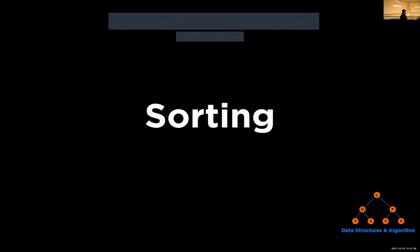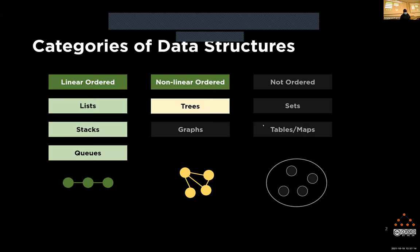Today we are going to complete sorting — I think we did not finish quicksort last time, so I'll go over the pseudo code for quicksort. Then we'll get started with sets, maps, and hash tables, which is also a crucial component of your project two. After Thursday's lecture you will have all the knowledge required for project two. We'll cover the first half today and the unordered map on Thursday.